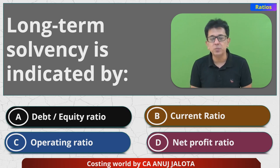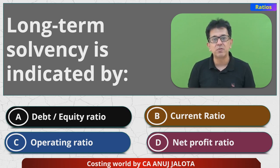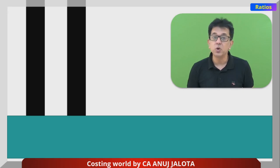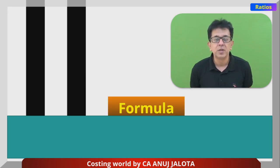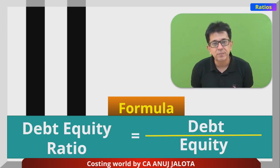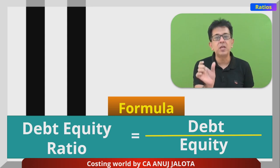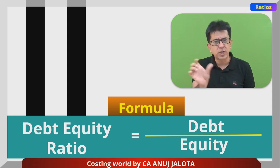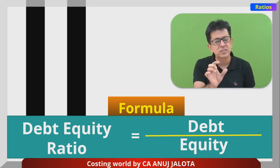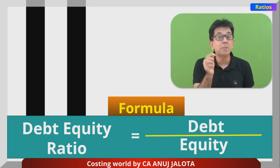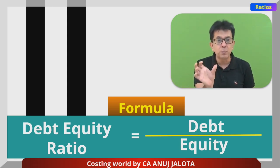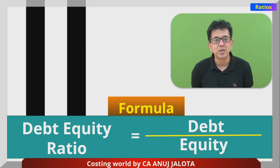So therefore, it has to be A. Let me explain A by way of the formula — that will be far better. Your debt equity ratio's formula is right there in the name itself: debt upon equity. That tells you for every rupee of equity funds — which includes equity shareholders' funds, reserves and surplus, and also preference share capital — how much debt you have. That is given by the debt equity ratio.